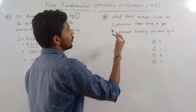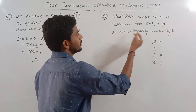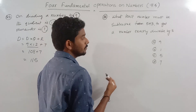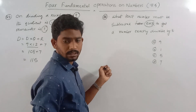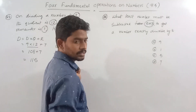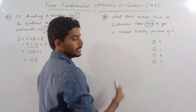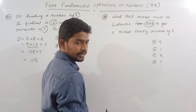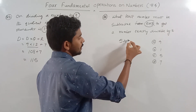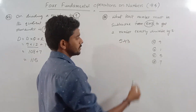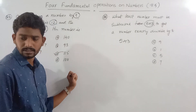What least number must be subtracted from 543 to get a number exactly divisible by 8? We need to find what to subtract from 543 so the result is exactly divisible by 8.